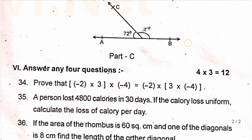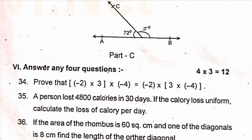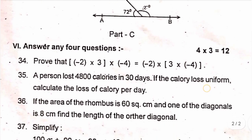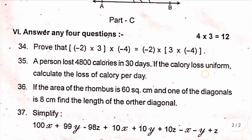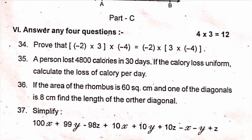Part C — Roman numeral 6, answer any 4 questions, each carries 3 marks. Question 34: prove that minus 2 into 3 into minus 4 equals minus 2 into 3 into minus 4 — this is an associative property proof. Question 35: a person lost 4800 calories in 30 days; if the calorie loss is uniform, calculate the loss of calories per day. Question 36: if the area of the rhombus is 60 square centimeters and one of the diagonals is 8 centimeters, find the length of the other diagonal. Question 37: simplify 100x plus 99y minus 98z plus 10x plus 10y plus 10z minus x minus y plus z.